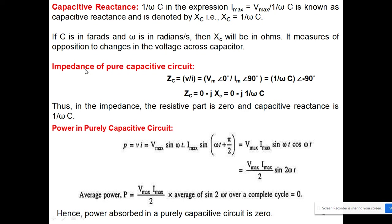If I want to write the impedance of a pure capacitive circuit, voltage divided by current — the current is leading, so I apply the j-operator. Because it is in the denominator, this term becomes negative, giving a minus sign. You can see that in the impedance the resistance part is zero and the capacitive part is given by 1/(ωC), written as −j·(1/ωC).